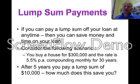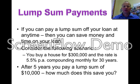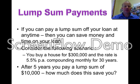You've got a house for $300,000, the rate is 5.5% per annum, and it's compounding monthly. You're paying it back, and after five years you pay a lump sum of $10,000. How much does this save you?